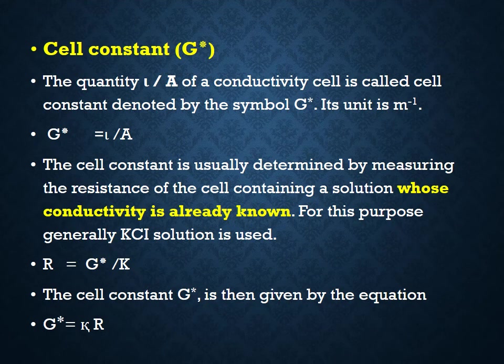Cell constant G star. The quantity L by A of a conductivity cell is called the cell constant. It is denoted by the symbol G star, where G star is equal to L by A. The cell constant is usually determined by measuring the resistance of the cell containing a solution whose conductivity is already known.